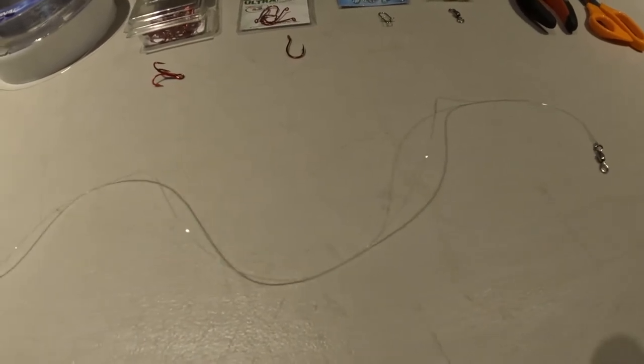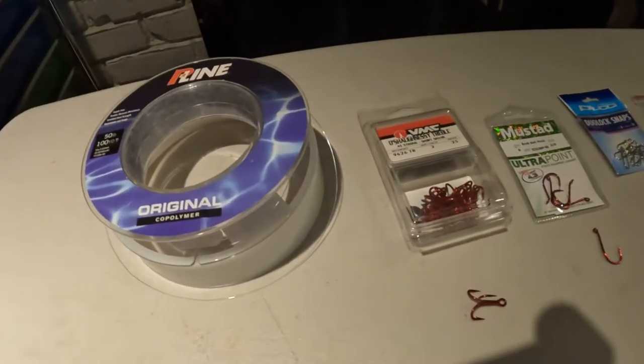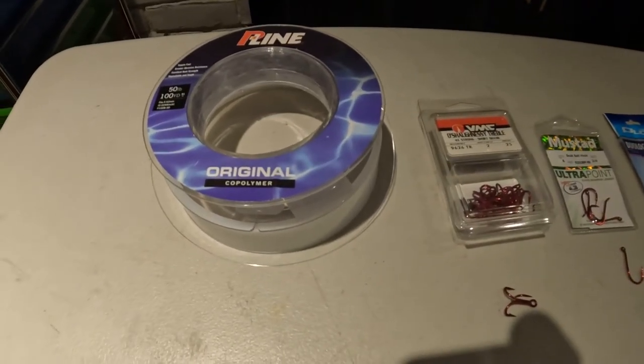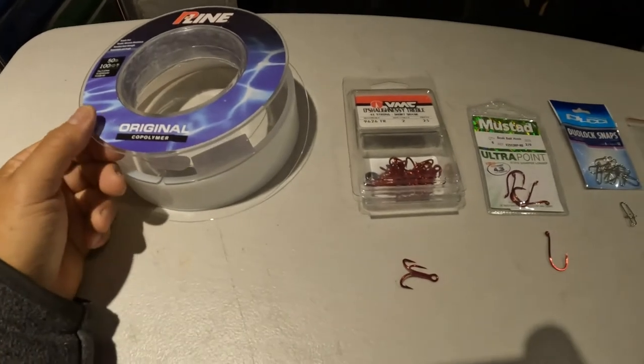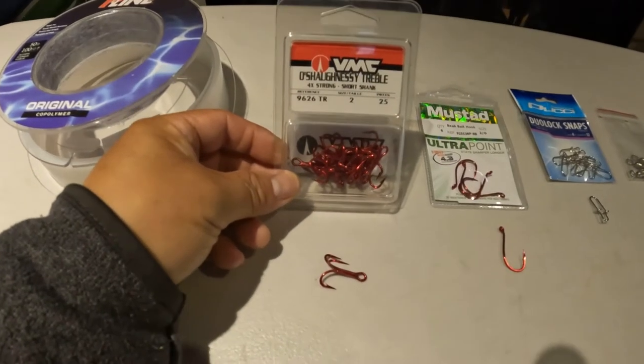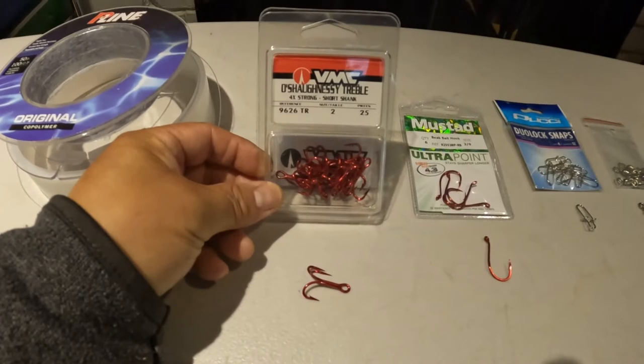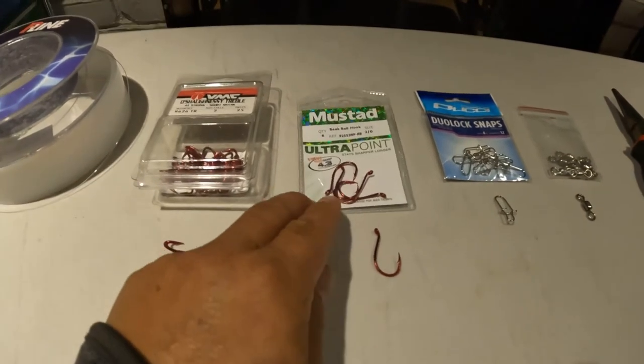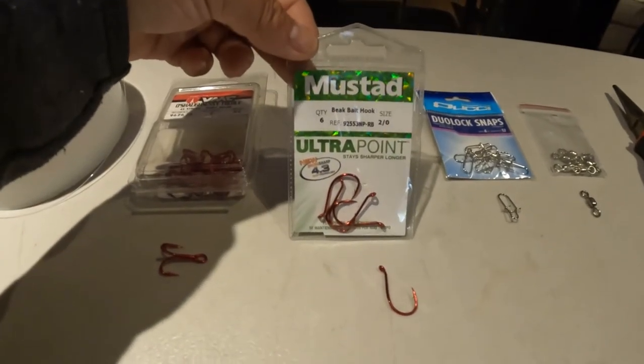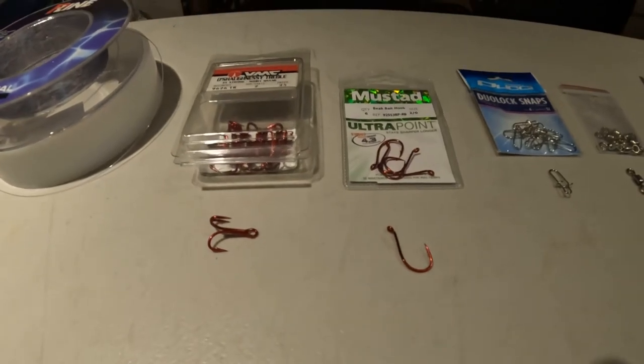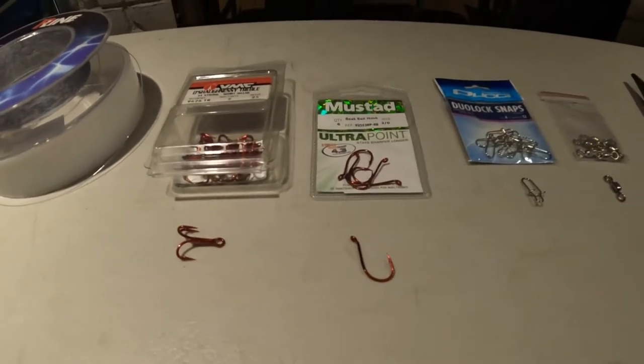Okay, here's a few of the things that you'll be needing to make this rig. I use 50 pound P-line fluorocarbon or mono, it doesn't really matter. I use VMC treble hooks size 2, these are pretty strong hooks, they hold up pretty well. And I use a Mustad size 2-0 hook. I like the coated ones with the red paint, it doesn't rust as fast as the other hooks do.